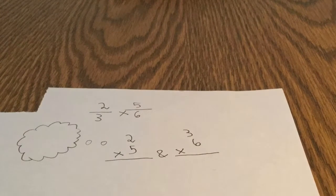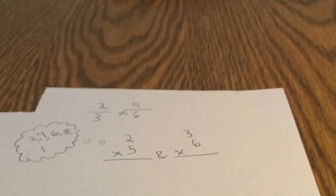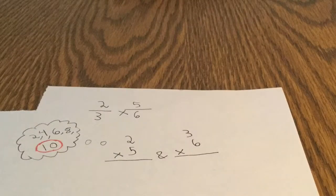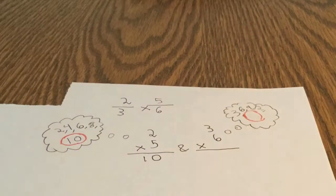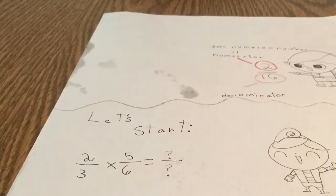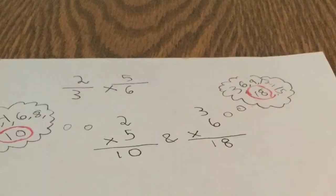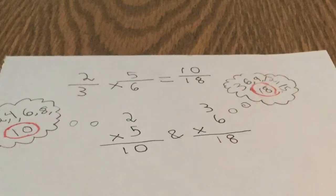Two times five is two, four, six, eight, ten. That's the answer. Let's write that down. Three, six, nine, twelve, eighteen. That's the answer. Let's go back to here. The answer is ten-eighteenths.